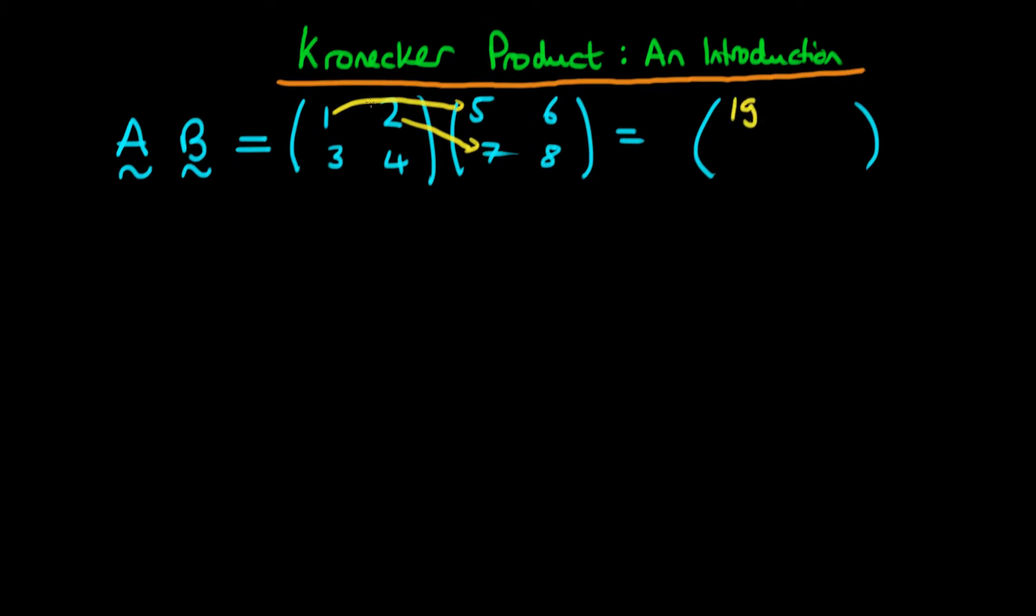To get the second component in the first row we take 1 and multiply it by 6 and 2 and multiply it by 8 and add them together, which gives 22. We could work out the other components and they would be 43 and 50 respectively.